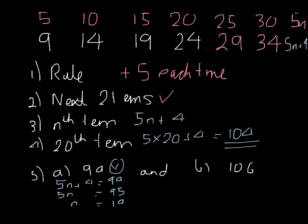And what about 106? Well, you'd let 5n plus 4 equal 106. Subtract 4 from both sides, 5n would be equal to 102. And if you do 102 divided by 5, n would be equal to 20.4, which is not a whole number, so therefore, no.